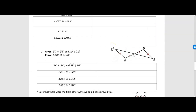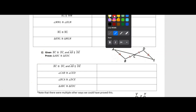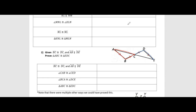Let's do one more dealing with AAS or ASA — go to number two. Read the given on your own, look at the diagram, read what you're supposed to prove, and see how many statements you can fill in. It says segment BC is congruent to segment DC, both marked with one tick mark, and line AB is parallel to line DE, marked with arrows. We're proving that triangle ABC is congruent to triangle EDC. The first statement is given — we have one set of sides.